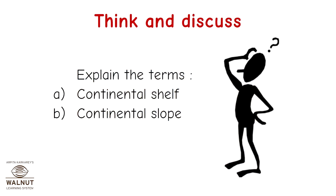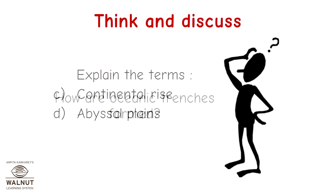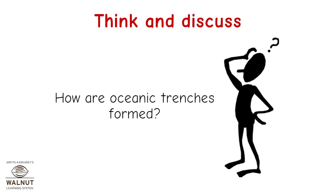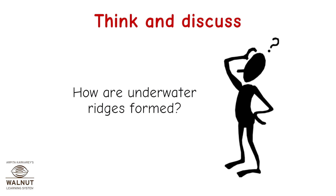Think and discuss: Explain the terms Continental Shelf, Continental Slope, Continental Rise, and Abyssal Plains. How are oceanic trenches formed? How are volcanic islands formed? How are underwater ridges formed?